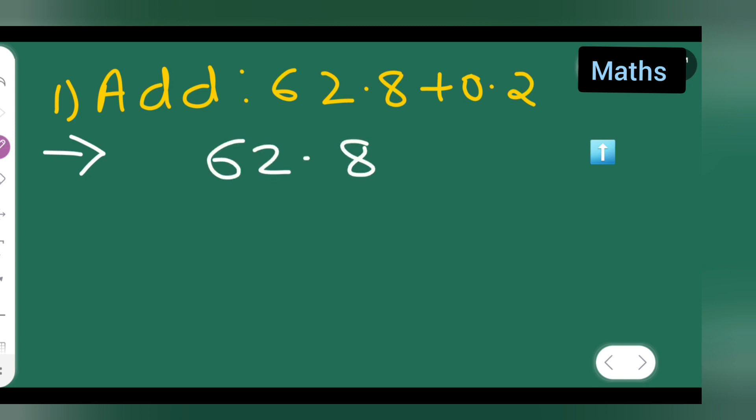62.8, you'll have to write. After that, you'll have to write 0.2. Okay, add these numbers now. So 8 plus 2 will be 10, right? So put 0 over here, point will be as it is, carry 1.